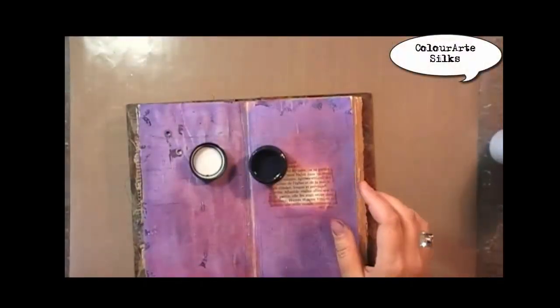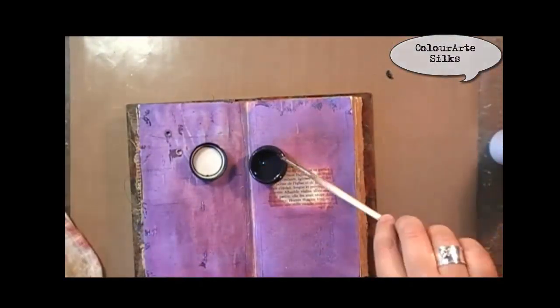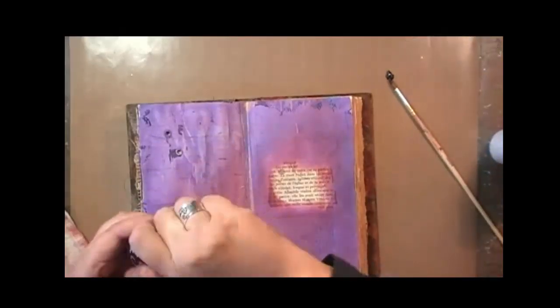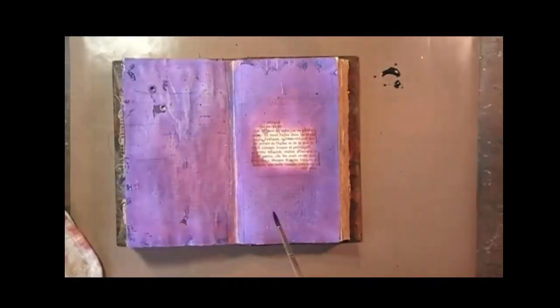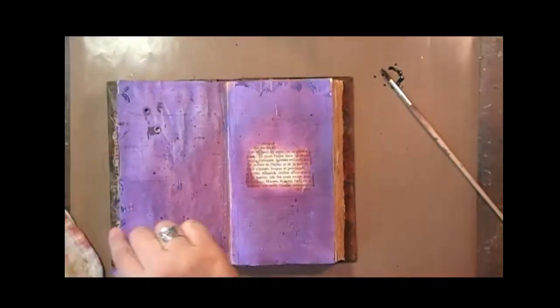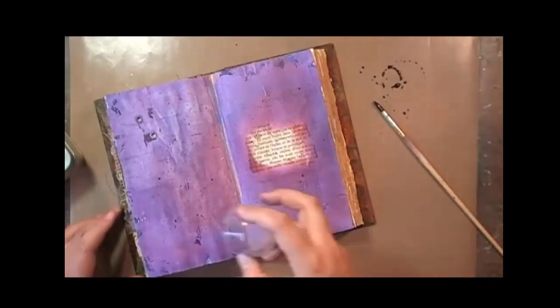You also need to ventilate your room when you use these kinds of products. Going in with color art silks acrylic glazing, adding a tiny bit of water so that I can add some splatters. When you go with your heat gun over the wax you have to be careful because the wax will melt, so I'm not heating it for too long.